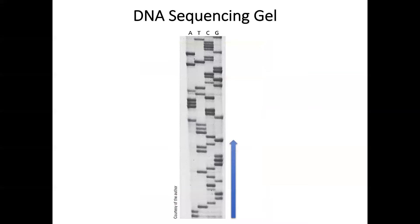We learned about Sanger sequencing, and I showed you a large DNA sequencing gel previously. This is another DNA sequencing gel showing the separation of fragments in four sequencing reactions. The sequence reads from the bottom, starting from the lowest band and going up to the top.